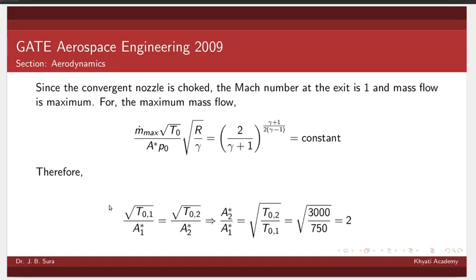First condition if we say 1 when afterburner is switched off and second condition when afterburner is switched on we call it as 2, then we have square root of T01 by A1_star is equal to square root of T02 by A2_star because all other parameters are constant. Therefore we have A2_star by A1_star is equal to square root of T02 by T01 which is nothing but square root of 3000 by 750, and that is equal to 2.